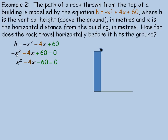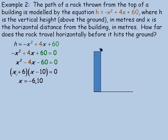We divide everything by negative 1 to make the x squared term positive, so every sign changes: x squared minus 4x minus 60 equals 0. We need two numbers that add to negative 4 and multiply to negative 60; those numbers are 6 and negative 10. This factors into (x plus 6)(x minus 10) equals 0. Setting each factor to 0, we get x equals negative 6 and x equals 10.